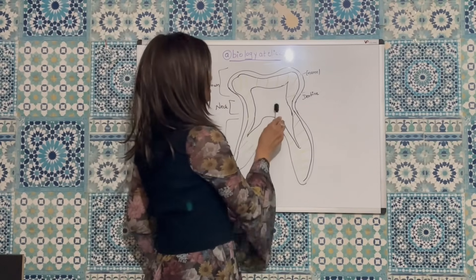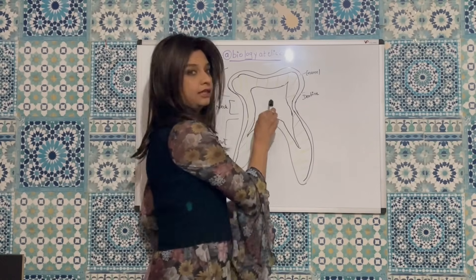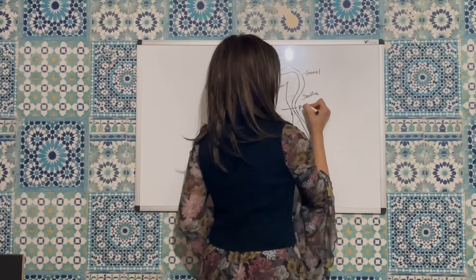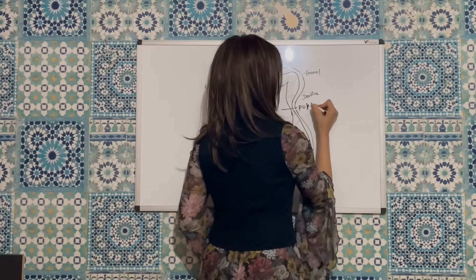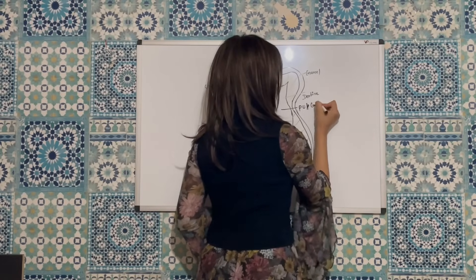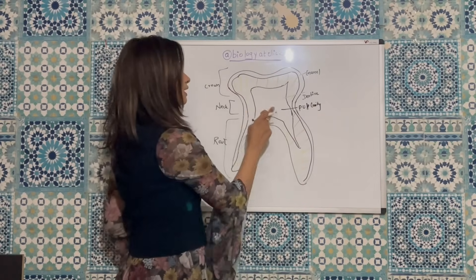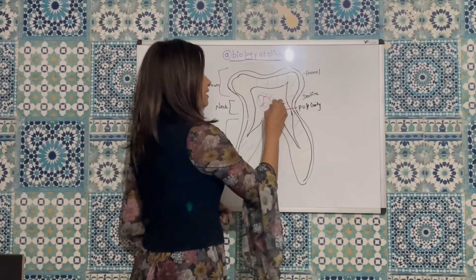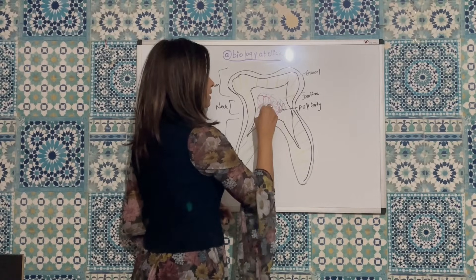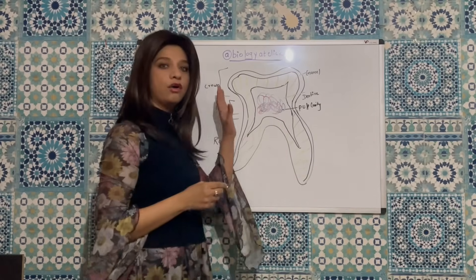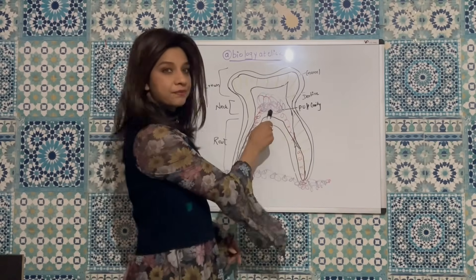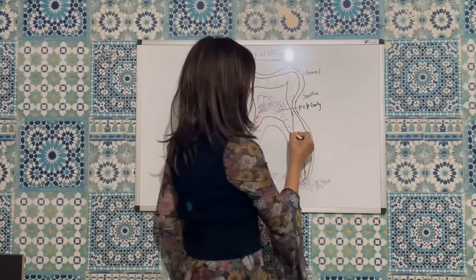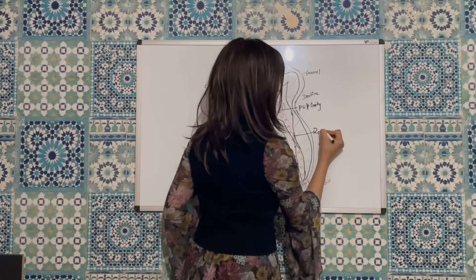Dentine is surrounded by a cavity which is termed as the pulp cavity. The pulp cavity is a softer, living, innermost layer of the tooth. Blood vessels and nerves run through the pulp cavity of the tooth. The pulp cavity extends at the end, and this is termed as the root canal.